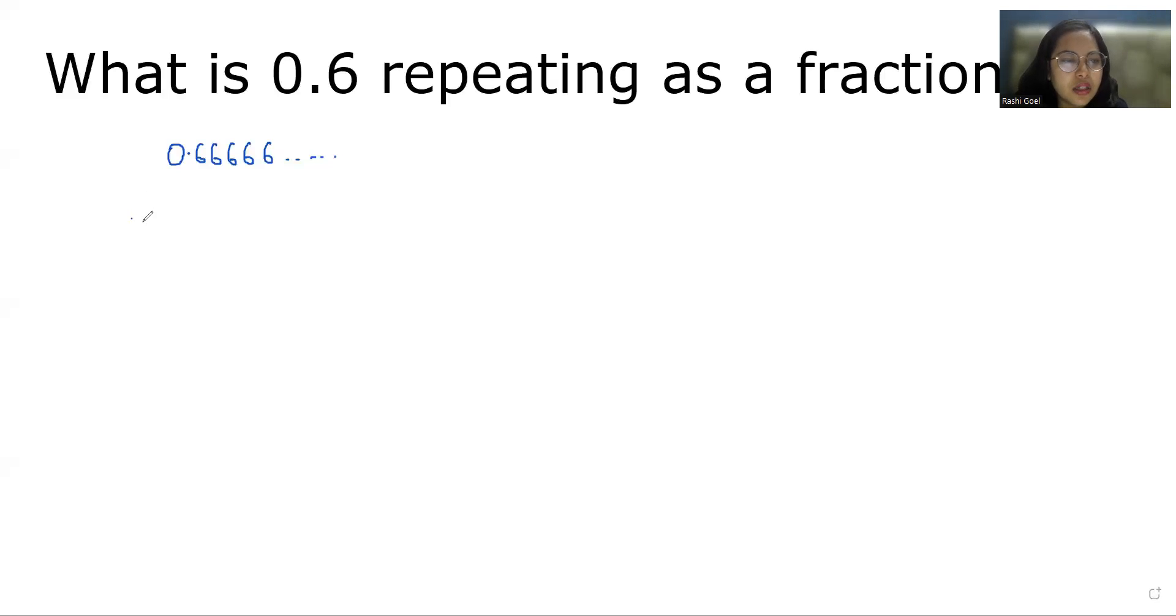We'll take this equals to x. So x equals 0.66666 and so on. Now there is a decimal after 1, so we'll multiply by 10 in this equation. We'll take this as equation number 1 and multiply by 10.